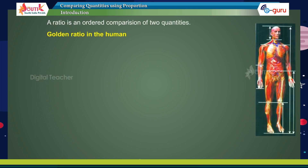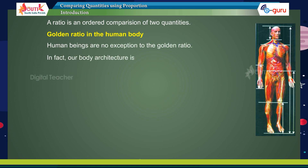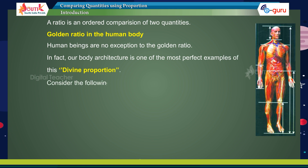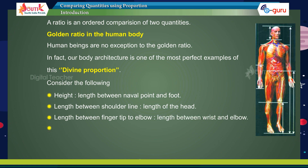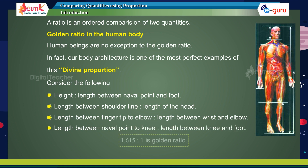Golden ratio in the human body: human beings are no exception to the golden ratio. In fact, our body architecture is one of the most perfect examples of this divine proportion. Consider the following: height to length between navel point and foot; length between shoulder line to length of the head; length between fingertip to elbow to length between breast and elbow; length between navel point to knee to length between knee and foot. The golden ratio is 1.615 is to 1.